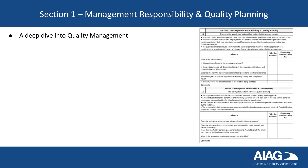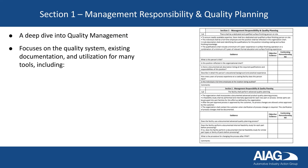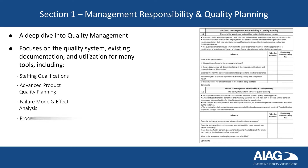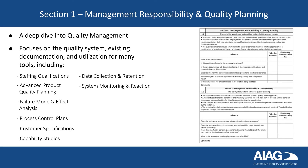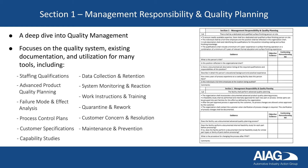Section 1 is a deep dive into the quality management system. It focuses on the quality system, existing documentation, and utilization of many tools, including staffing qualifications, advanced product quality planning, failure mode and effect analysis, process control plans, customer specifications, capability studies, data collection and retention, system monitoring and reaction, work instructions and training, quarantine and rework, customer concern and resolution, and maintenance and prevention.